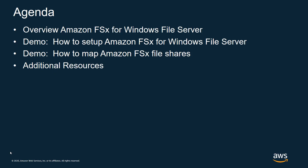Here's a quick agenda of what we'll be covering in this session. First, I want to provide an overview of what Amazon FSx for Windows File Server is, then run through a couple of demos — the first on how to set it up and how to map a file share to it — and then provide some additional resources.